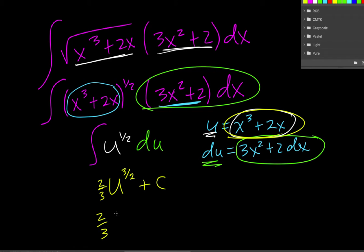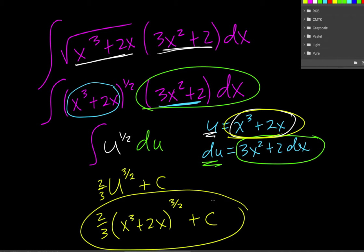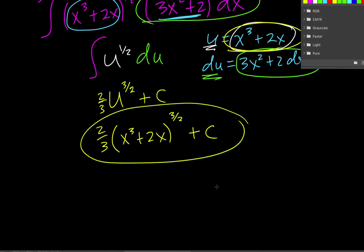And then the final step is just replace u with the value for u. So 2 thirds like that. And then plus c, and that's everything.